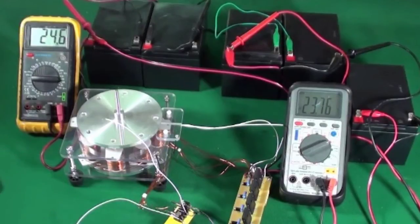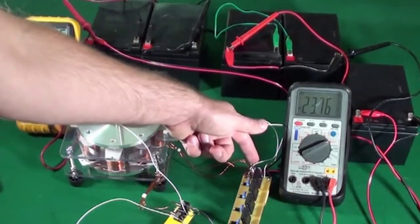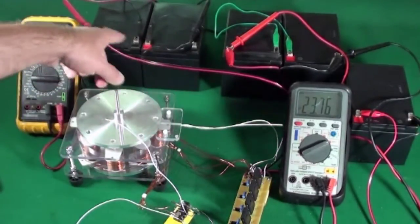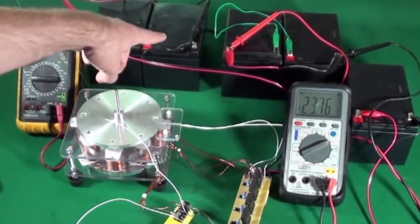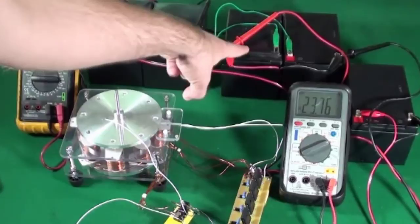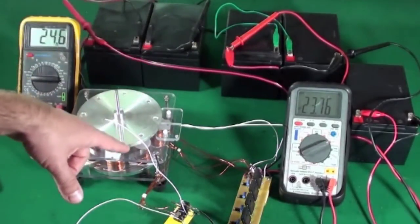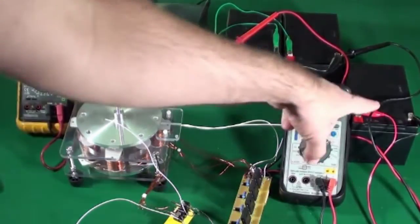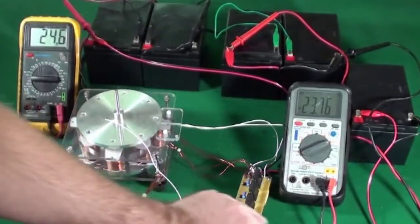So there are a couple of switches here. This turns on and off the main power, which is these batteries at 24.6 volts, and these are the charging batteries here at 23.76 volts. This is another battery being charged through the generator coils, which is this circuit right here.